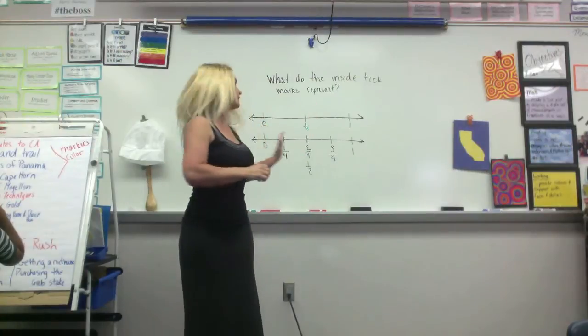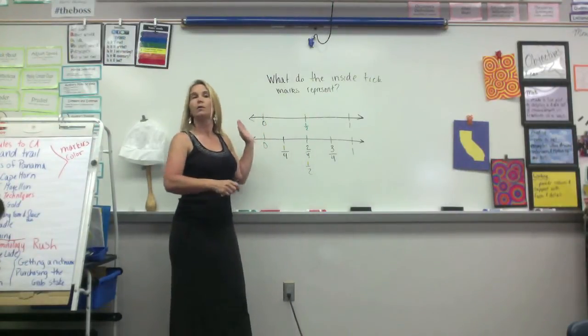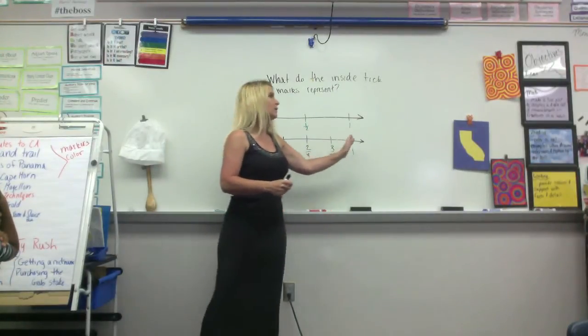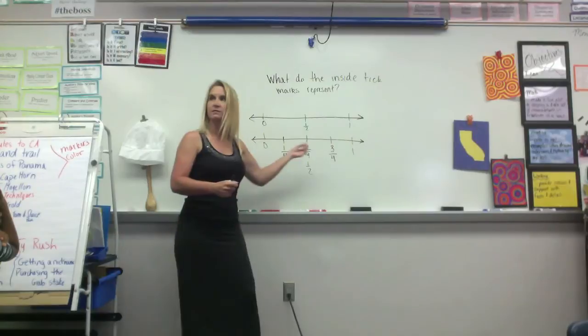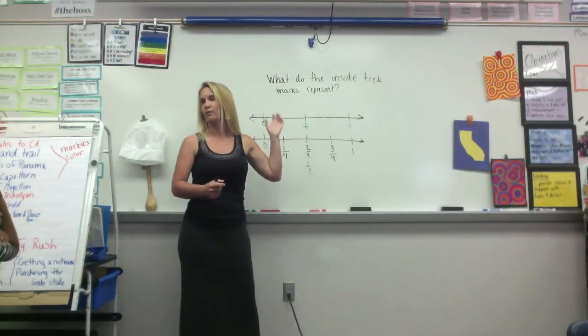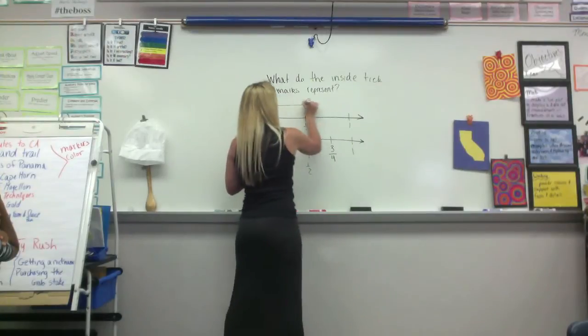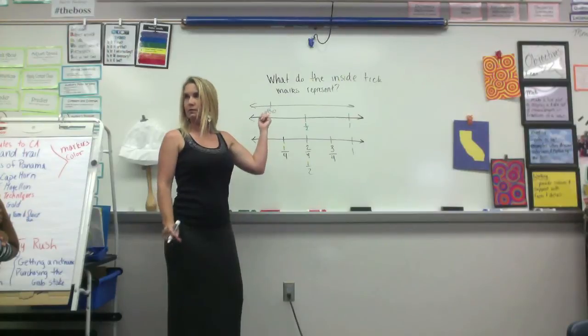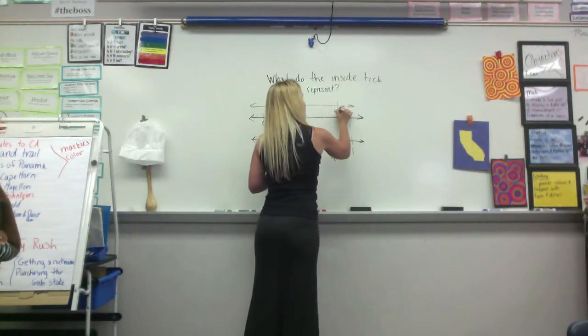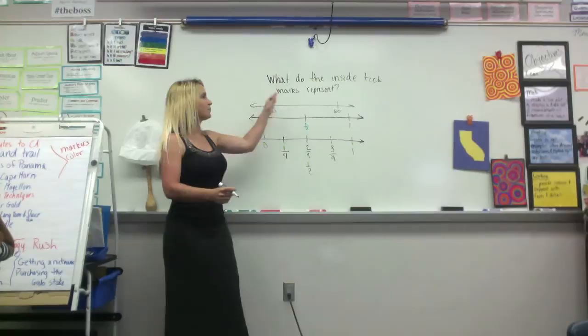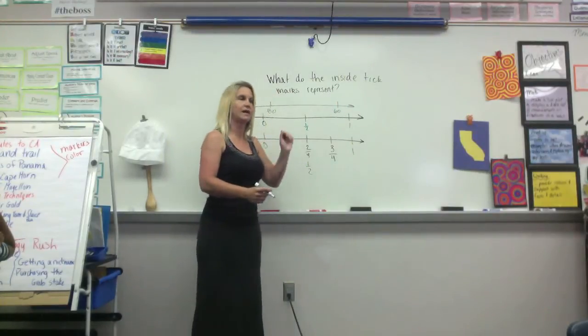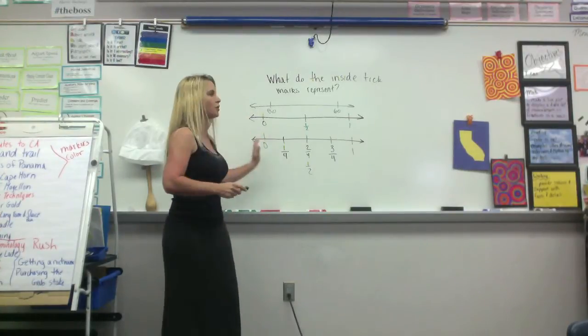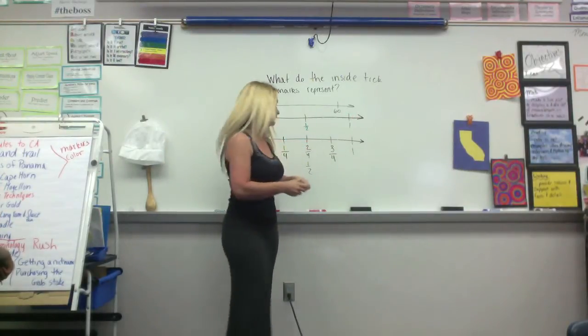So remembering that a number line can be broken up based on what my starting point might be, zero. My end point is one, and I can divide what's inside however I want. I can also take a number line and start it at 50, and make this 60. And then I can put tick marks in between to represent 51, 52, 53, and so on. So I can make my number line whatever I want. These number lines are showing fractions.